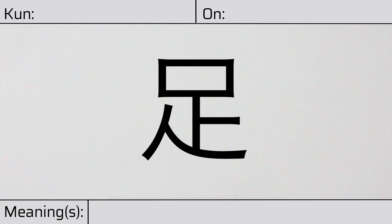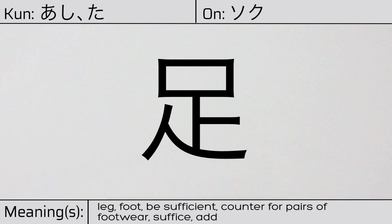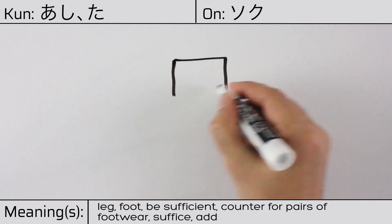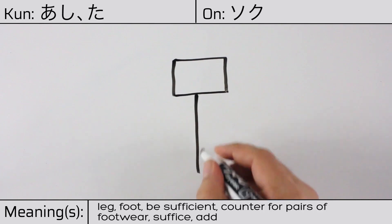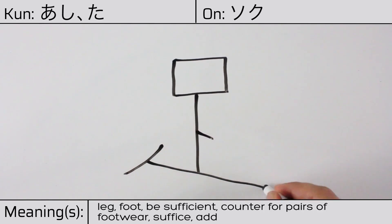Welcome to this lesson on Japanese kanji. Today, we'll be discussing this character. This kanji has kunyomi or Japanese readings of ashi or ta, and it has an onyomi or Chinese reading of soku. This character has the meanings leg, foot, be sufficient, suffice, or add. Here is the stroke order.